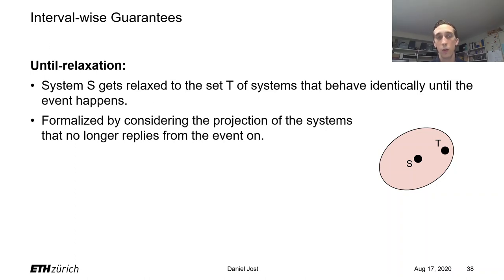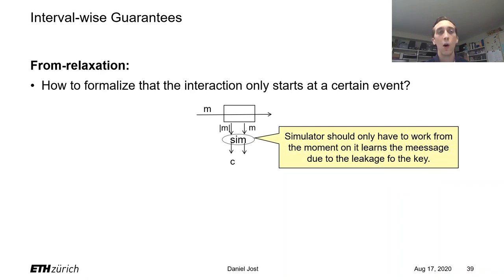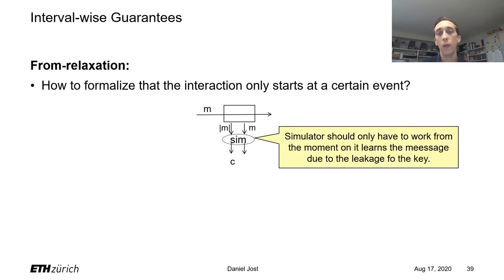For the first interval we want to say it should behave like this channel but we don't care about what happens after the key got exposed. This is not so difficult to formalize — for instance we could say it's the set of all resources T that behave like this channel if all systems shut down at the moment the key is leaked, or if the environment has to stop once the key is leaked. For the second interval, more interestingly, we want to formalize a relaxation that says we don't care about what happens before the key got leaked, and in particular the simulator only has to work from the moment the key is leaked, at which point it learns the full message and can trivially produce a ciphertext by just encrypting the message.